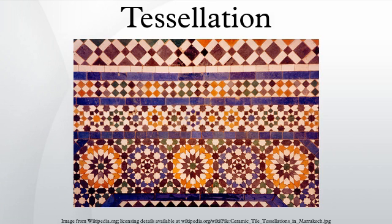A tiling that lacks a repeating pattern is called non-periodic. An aperiodic tiling uses a small set of tile shapes that cannot form a repeating pattern.